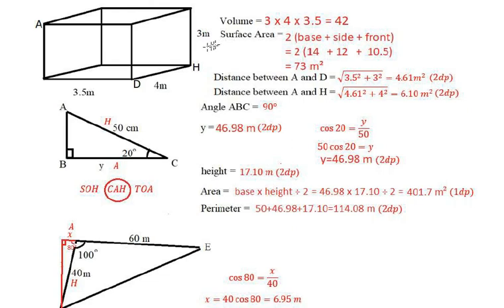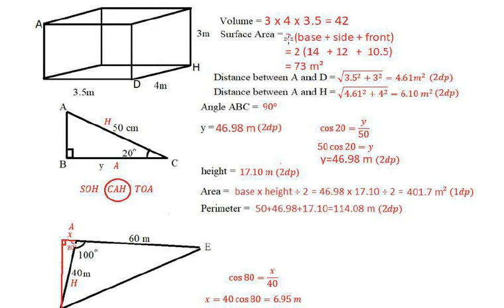So, surface area. That's like if you painted everything — you've got to work out the area of the sides. Notice that this side here is exactly the same as this side. The top and bottom are the same, so you can double everything. The front and the back will be the same. So if I work out just one of each and then double it, multiply by 2. I can work out the base, plus the side, plus the front or the back — either one — and just double everything, and then you get the surface area.